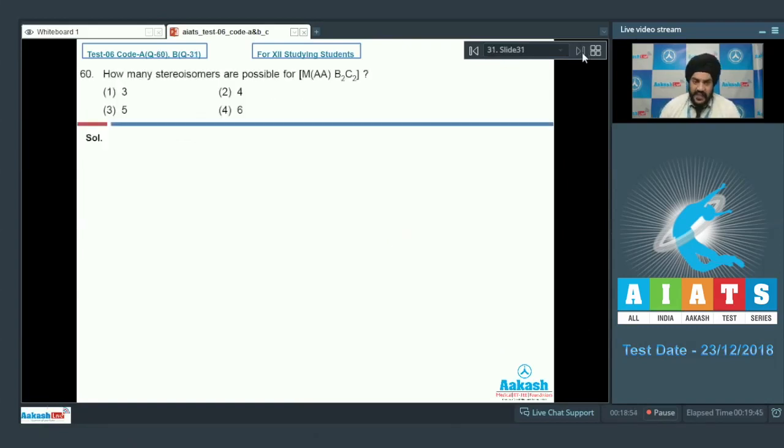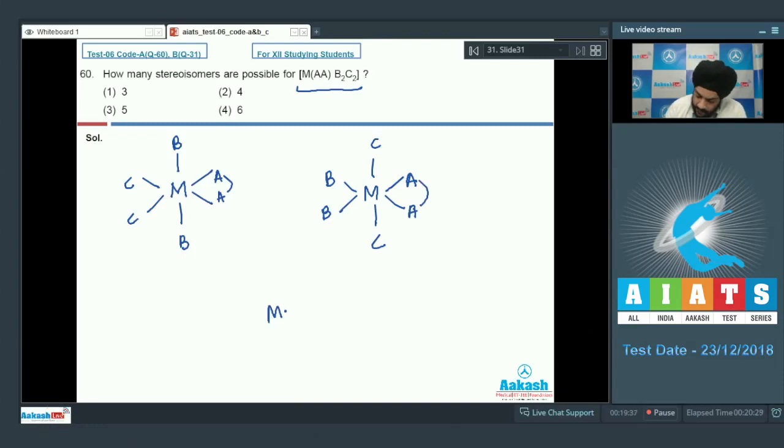Question number 60: how many stereoisomers are possible for [M(AA)(B2)(C2)]? The bidentate ligand AA can only have a cis form. For the other four positions, we can have B trans B, so C and C will be cis to each other. We can also have C trans C, and the B ligands will be cis to each other. We can also have a third case where B trans C, so the other B and C will be cis to each other.